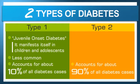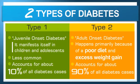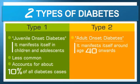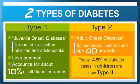The other 90% of diabetes is known as type 2, and it's traditionally referred to as "adult onset diabetes." This happens primarily because of a poor diet and excess weight gain. While it was originally named adult onset diabetes because it typically manifested around age 40 and beyond, today 45% of diabetes cases in children are now type 2 — a very sad reflection of our children's health.